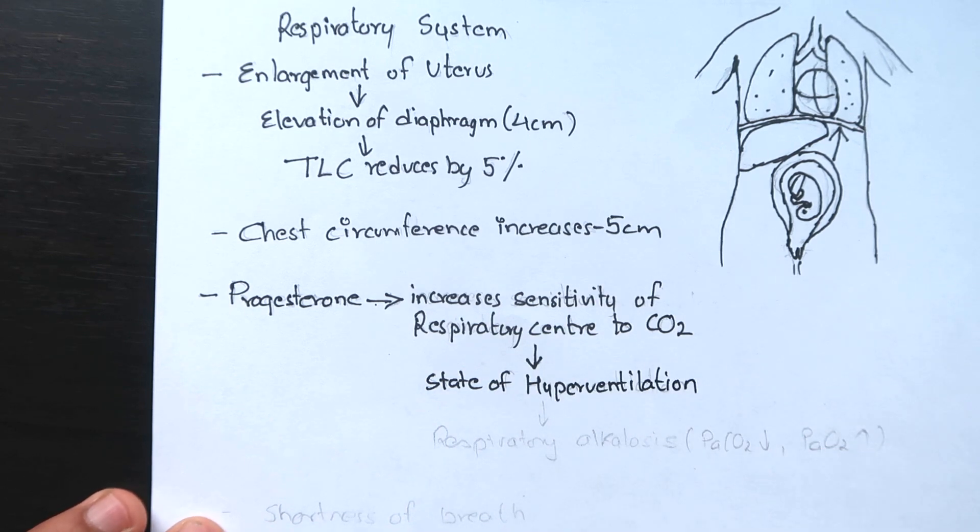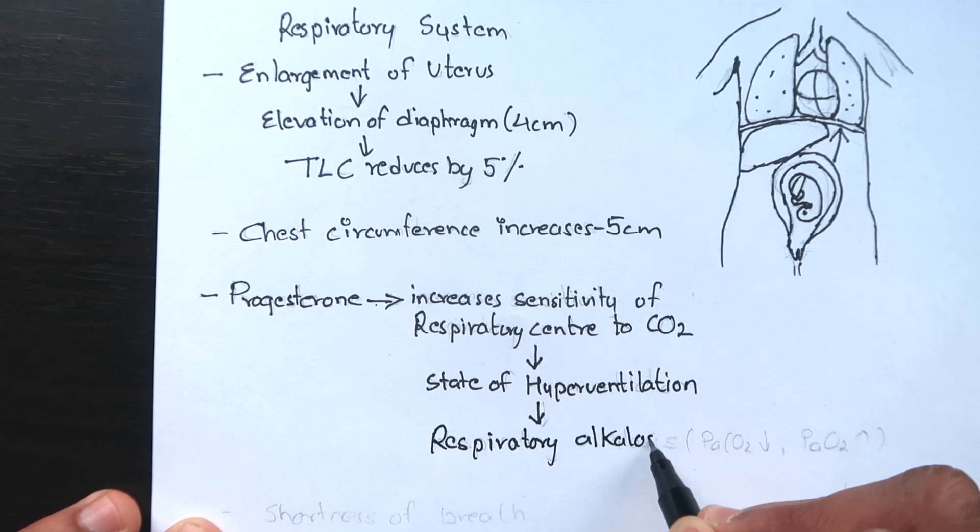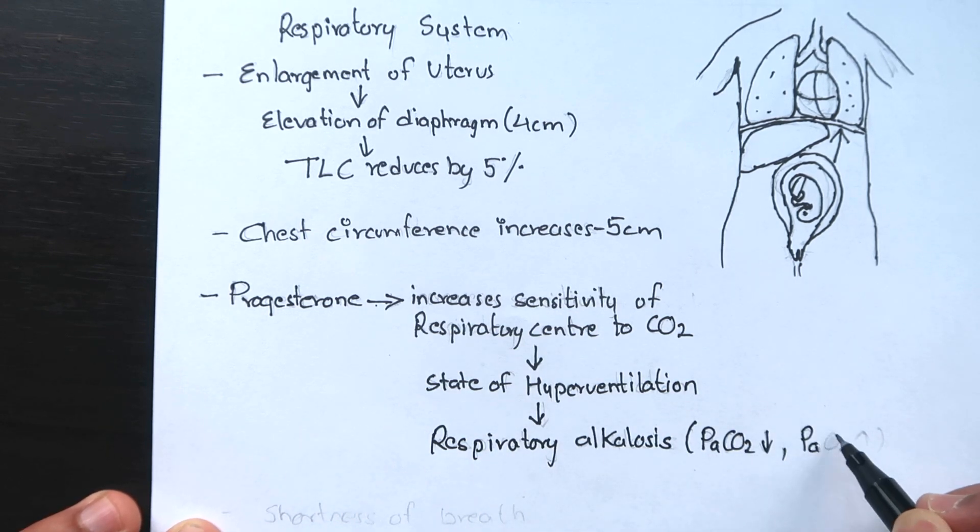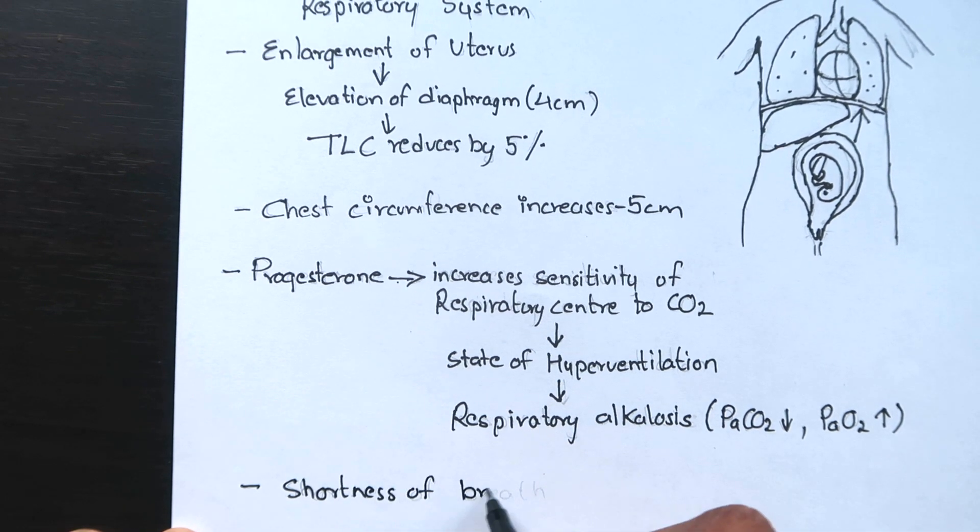Thus, pregnancy is in a state of respiratory alkalosis. Partial renal compensation occurs through increased excretion of bicarbonate. The women also feel shortness of breath.